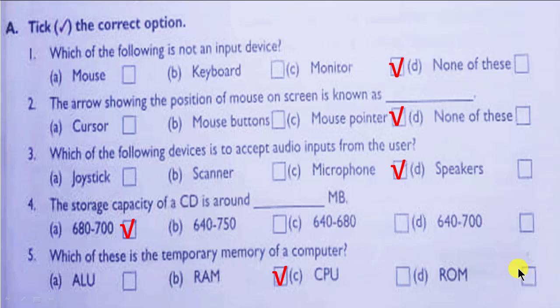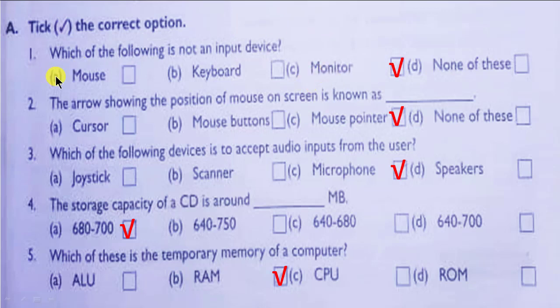Hello students, today we are talking about the back exercise and question answers of Lesson Number 1. Your first question is tick the correct option, or you can say MCQs. I am reading the question and the answer directly. In your copy, you have to write all full options and put the right mark.